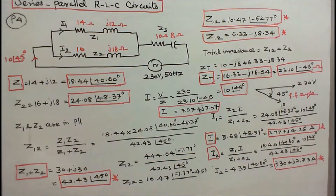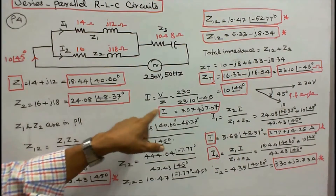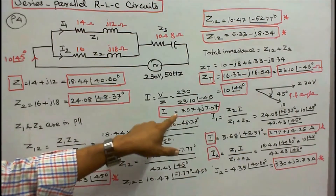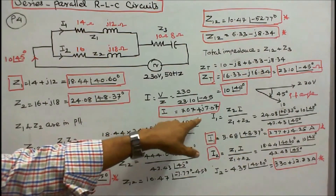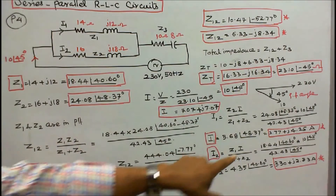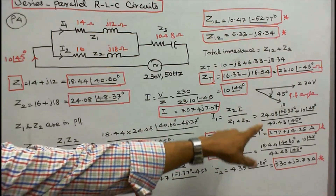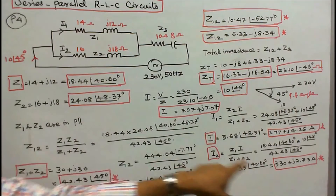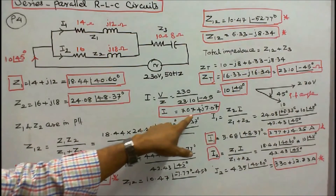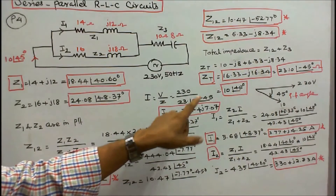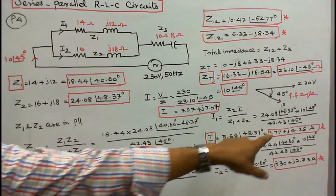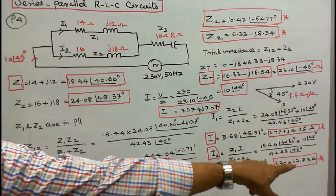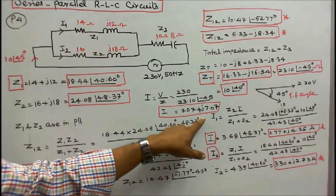Now I can verify the total current: total current = 10∠45° = 7.07 + j7.07. Checking: real parts 3.77 + 3.30 = 7.07; imaginary parts 4.25 + 2.83 = 7.07. Verified.